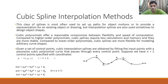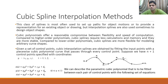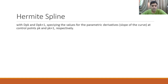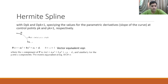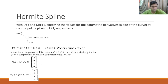We can describe the parametric cubic polynomial fitted between each pair of control points p_k and p_{k+1}. With dp_k and dp_{k+1} specifying the values for the parametric derivatives — the slopes at those control points — we write p(u) = a·u³ + b·u² + c·u + d as a vector equation. The x, y, and z components follow the same form. We can also form a slope equation by differentiating p(u) with respect to u to get p'(u).